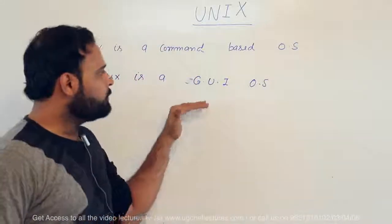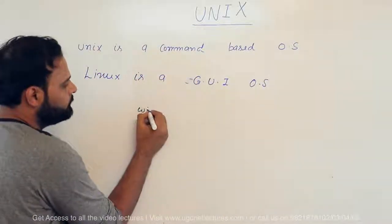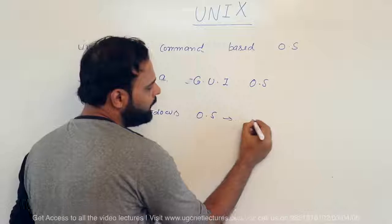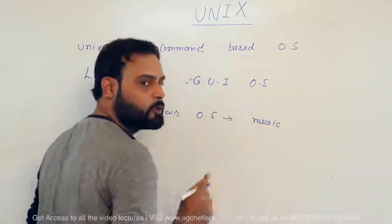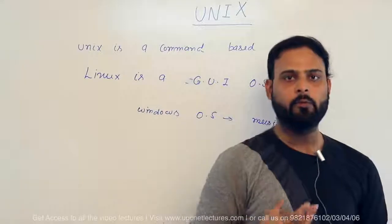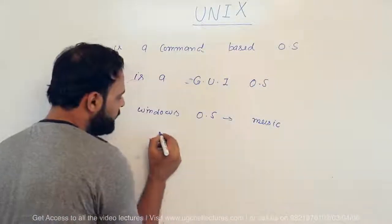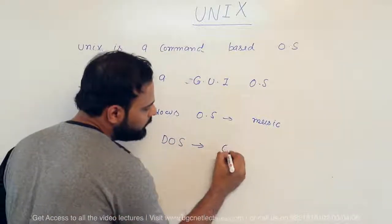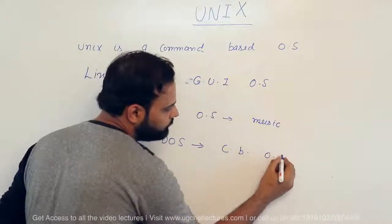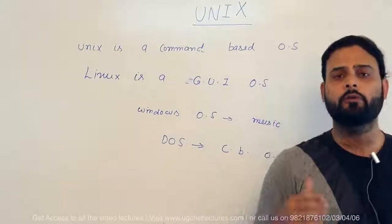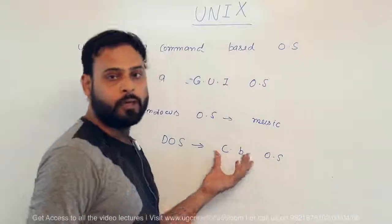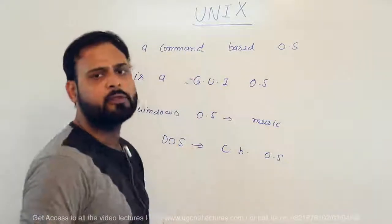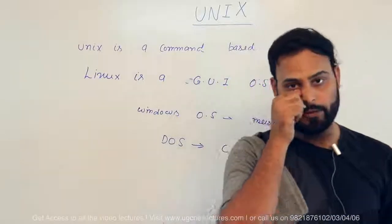A little example: in Windows, if you want to play music, you go to that folder and click the song and the music plays. But there is a version of Windows called DOS — Disk Operating System — which is completely command-based. You can't use a mouse; you use only the keyboard to interact. This is the basic difference between a command-based OS and a GUI-based OS.